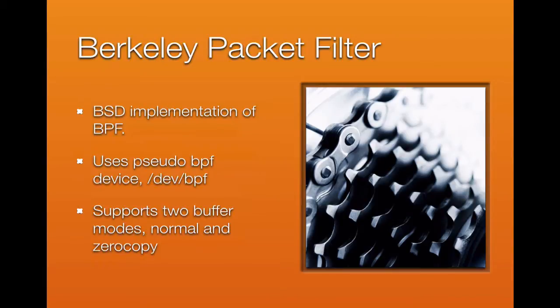On the BSD family of operating systems, a pseudo device is used to access packets. There's a file descriptor and standard read/write system calls are used to interact with the /dev/BPF device, so it is implemented as a device file. BSD also offers two buffer modes: normal and zero-copy. Zero-copy on FreeBSD requires a specific kernel setting and a sysctl setting to enable, but once available it provides performance gains through a shared memory-mapped buffer.